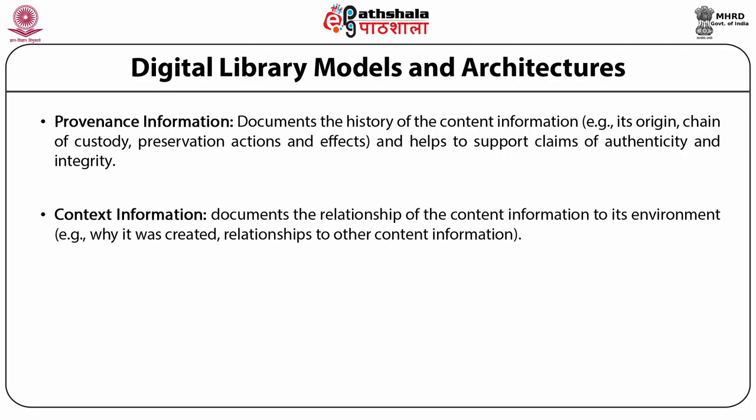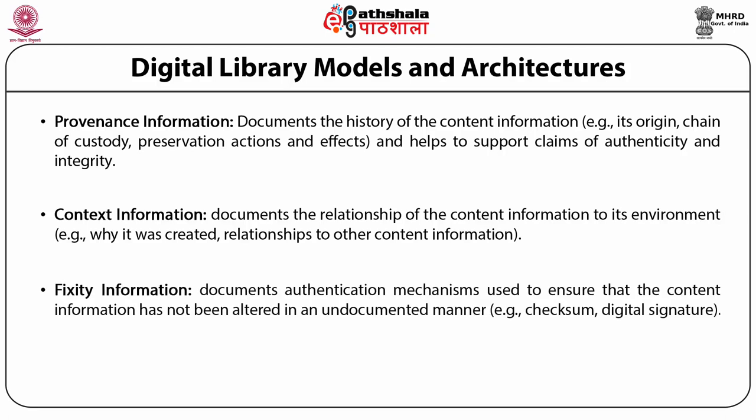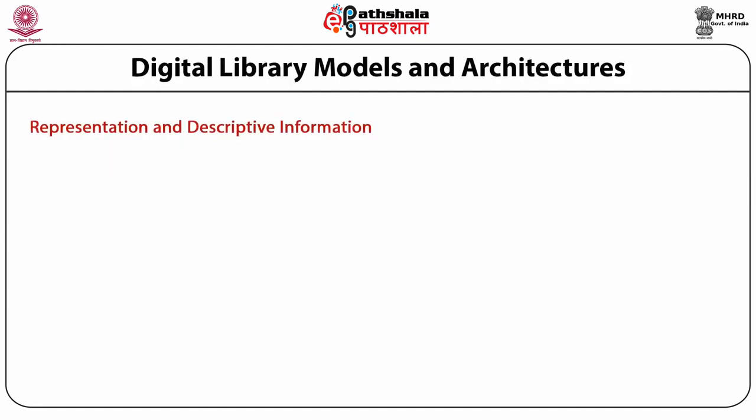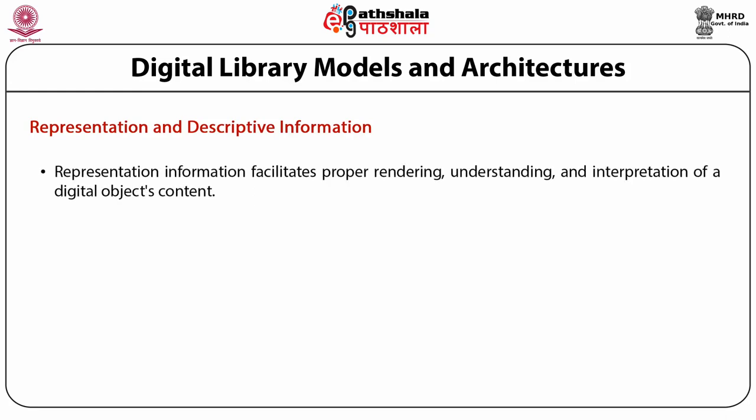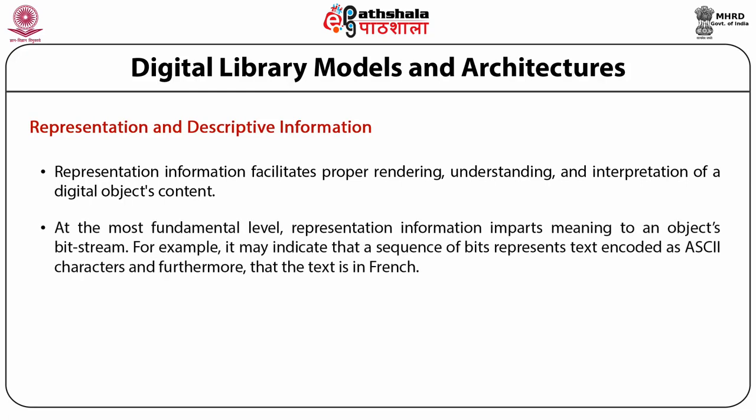Context information documents the relationship of content information to its environment — for example, why it was created and its relationship to other content information. Fixity information documents authentication mechanisms used to ensure that the content information has not been altered in an undocumented manner — for example, checksum and digital signature. Representation information facilitates proper rendering, understanding, and interpretation of digital objects' content. At the most fundamental level, representation information imparts meaning to an object's bit stream — for example, it may indicate that a sequence of bits represents text encoded as ASCII characters, and furthermore that the text is in French.